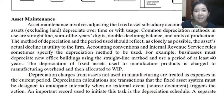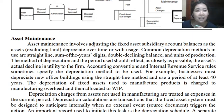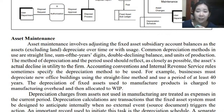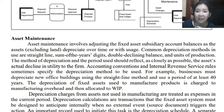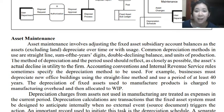For asset maintenance, this involves adjusting the fixed asset subsidiary account balances as the assets — excluding land — are depreciated over time or with usage, depending on the depreciation method used. Common depreciation methods include straight line, sum of the years digits (SYD), double declining balance, and units of production. The method of depreciation and period used should reflect as closely as possible the asset's actual decline in utility to the firm, meaning they depreciate the fixed asset depending on how it is used and the nature of the asset.